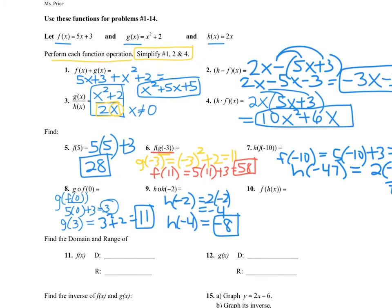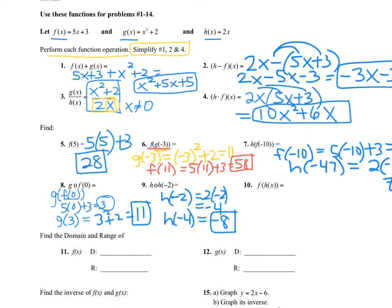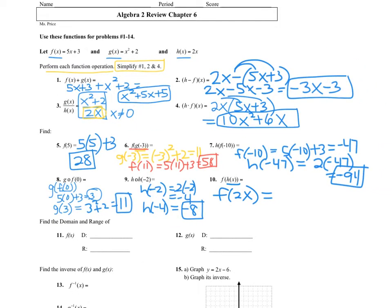Number 10 — you will have one of these on the test tomorrow. You're going to take function h of x, which is 2x, and plug it into function f. To evaluate f of 2x, you take the x out of f and plug in 2x in its place, so you get 5 times 2x plus 3, which gives you 10x plus 3 when simplified.